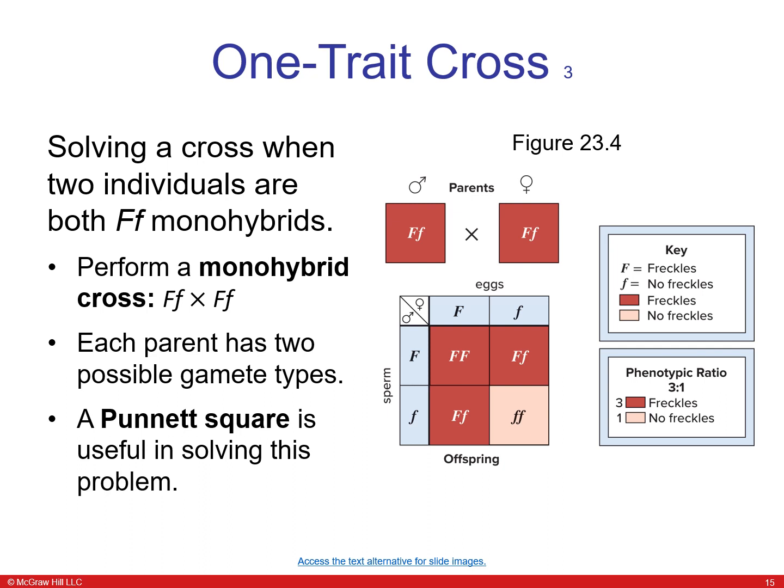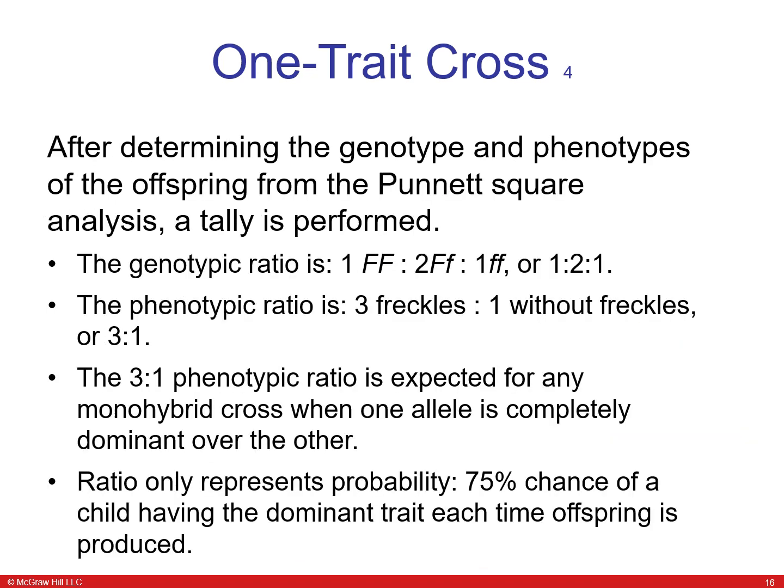In a monohybrid cross between two heterozygotes, three-fourths of the offspring will have freckles and one-fourth will not — shown using a Punnett square. After determining genotypes and phenotypes, you can get a genotypic ratio and a phenotypic ratio. The three-to-one phenotypic ratio is expected for any monohybrid cross when one allele is completely dominant over the other.